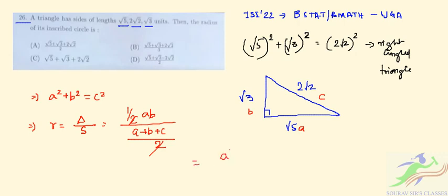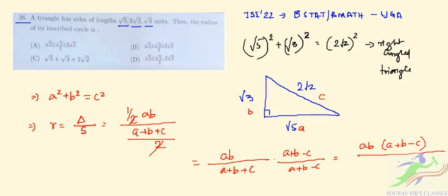So we can write it in this manner that if we take this as a plus b minus c and a plus b minus c, if we do the multiplication both sides, so it will be a b, a b, a plus b minus c, and it will be simply a plus b whole square.